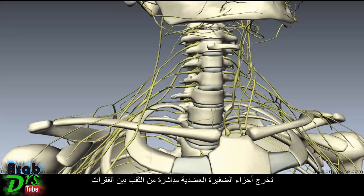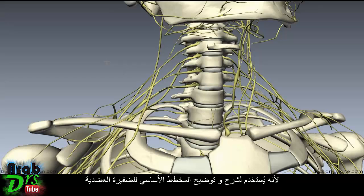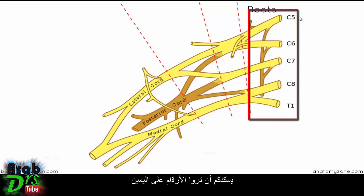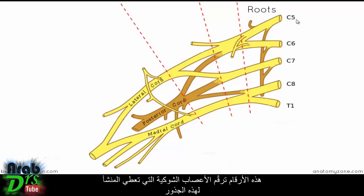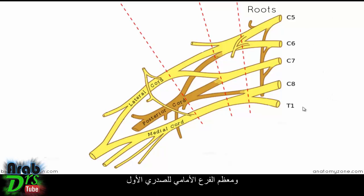Immediately exiting the intervertebral foramen, you've got the parts of the brachial plexus which are referred to as the roots. We're going to switch over to a diagram which you'll see over and over again — it's used to explain and demonstrate the basic layout of the brachial plexus. This is a diagram you need to familiarize yourself with. Proximally, we're looking at the roots of the brachial plexus, and the numbers on the right indicate the spinal nerve which gives rise to these roots.